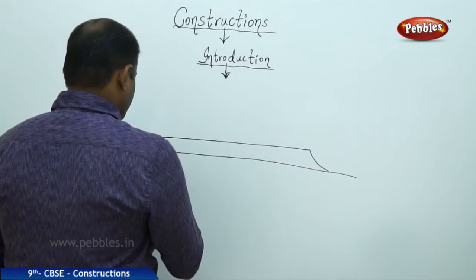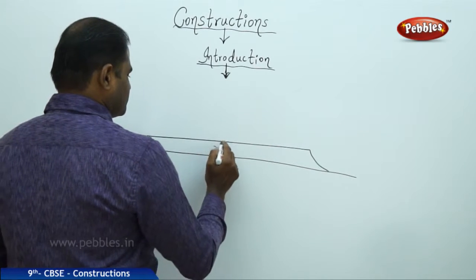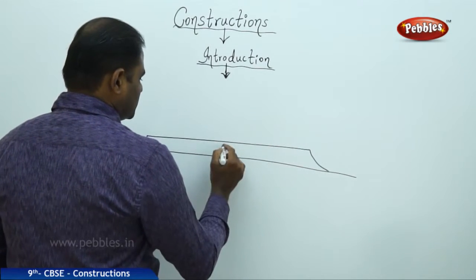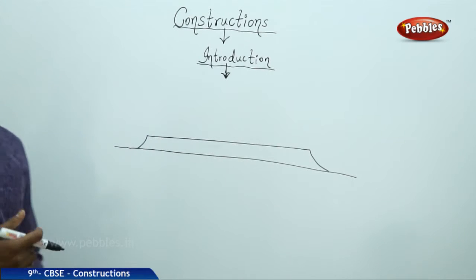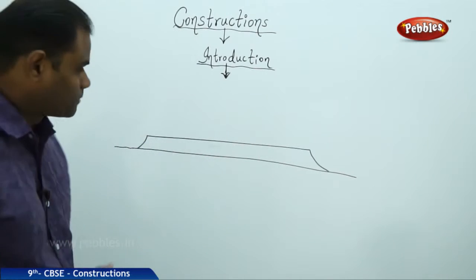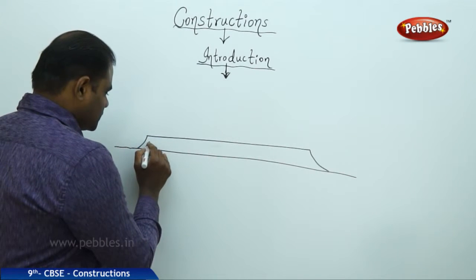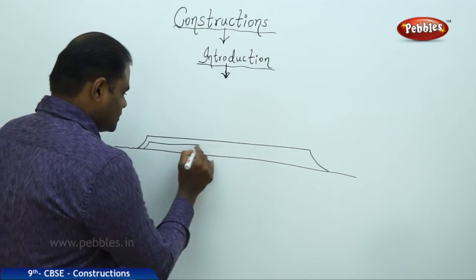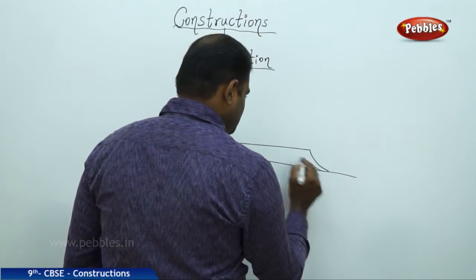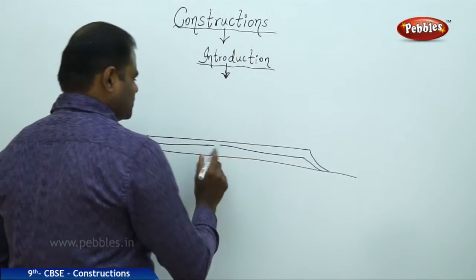This is the bridge along which I would like to construct a support. As you have here, the bridge has the support in either sides, but it needs to have a support in the middle.